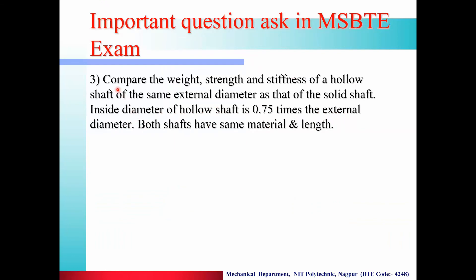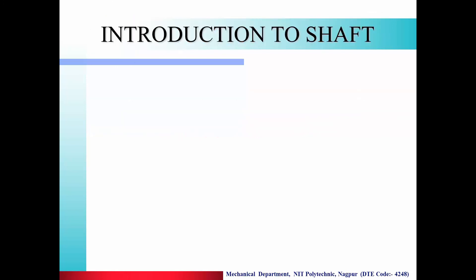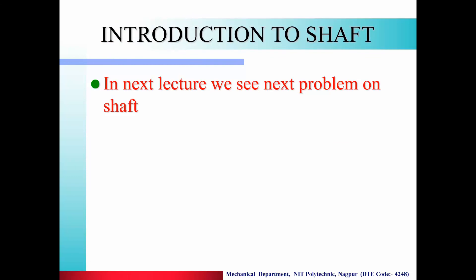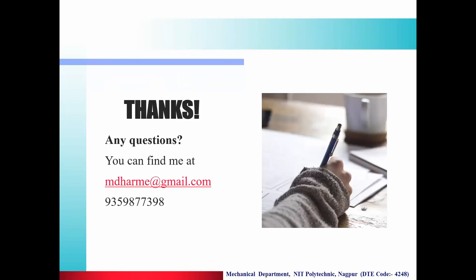The third problem is: compare the weight, strength, and stiffness of a hollow shaft of the same external diameter as that of the solid shaft, where the inside diameter of the hollow shaft is 0.75 times the external diameter and both shafts have the same material and length. In the next lecture, we see the next problem on shaft. Thanks — for any query, contact this number.